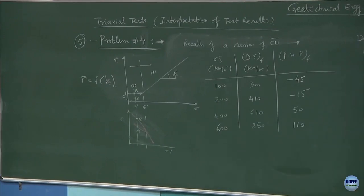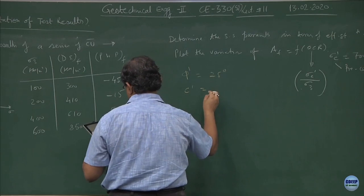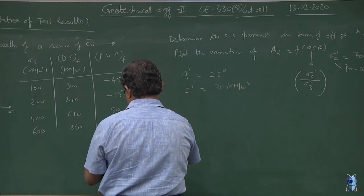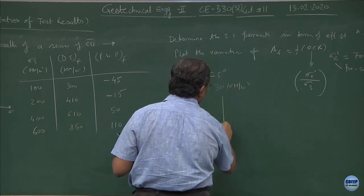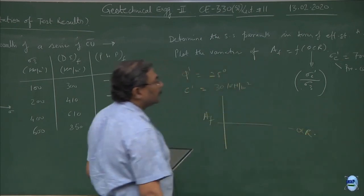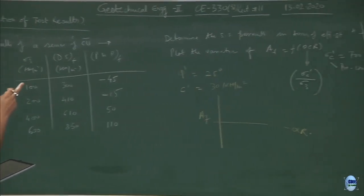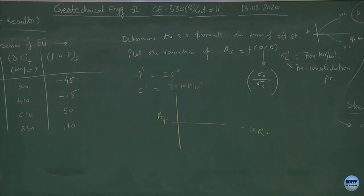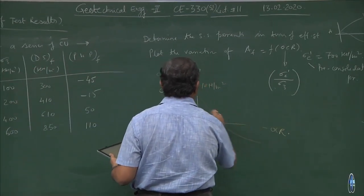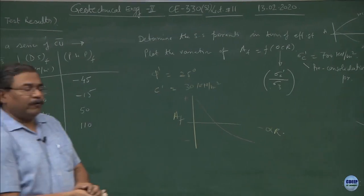From all sides, we are safe. Phi prime is 25 degree. C prime is 30 kilo Newton per meter square. The first time we are plotting AF versus OCR. Until now, we have been plotting A as a function of percentage strain. What you will be getting is this graph is useful for the designers.